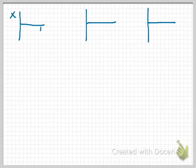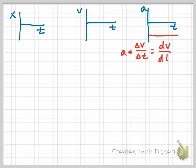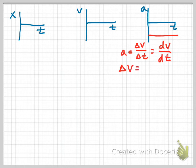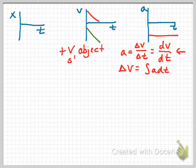Now let's look at graph shapes for negative acceleration. Acceleration is change in velocity over change in time — something from AP Physics 1. Moving forward in AP Physics C with calculus, acceleration will be the derivative of velocity with respect to time. The change in velocity is also the integral of acceleration with respect to time. Now with a negative acceleration, let's look at the velocity versus time graphs.